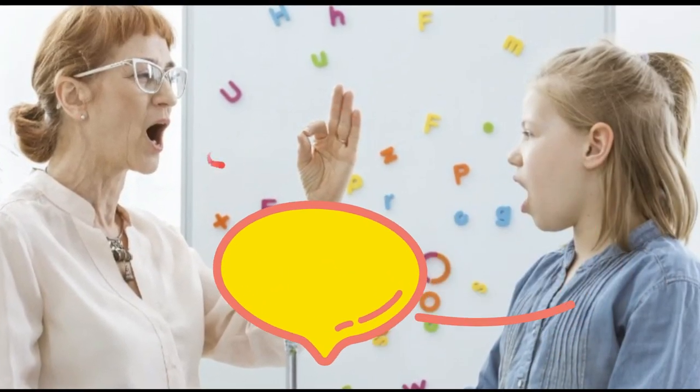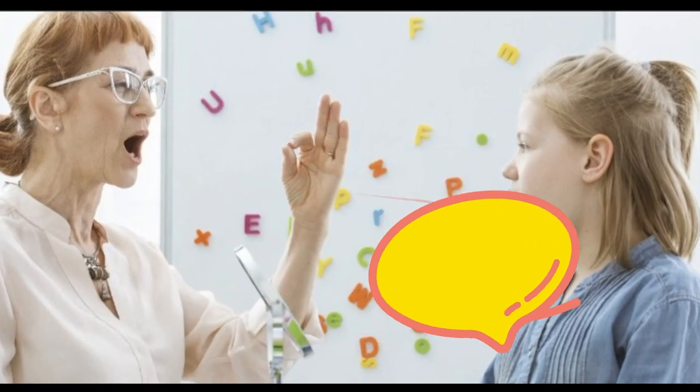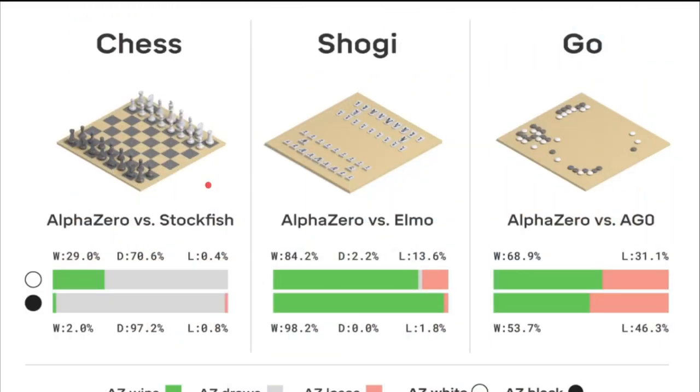It also works on speech impairment using deep learning. DeepMind also developed software which plays chess, Shogi, and Go. These are three different types of games, and the project name is AlphaZero.